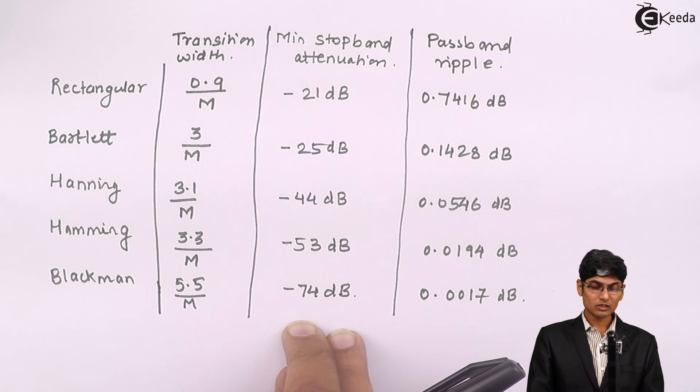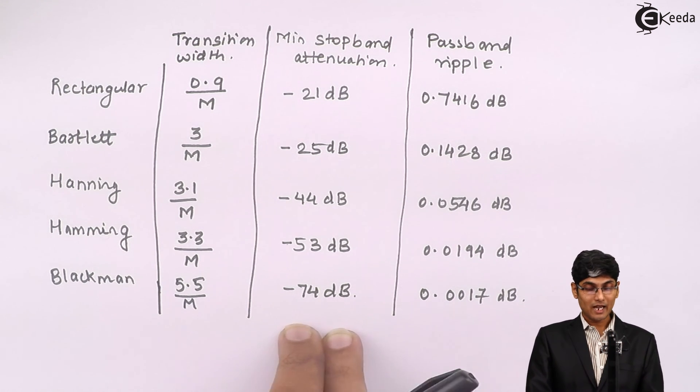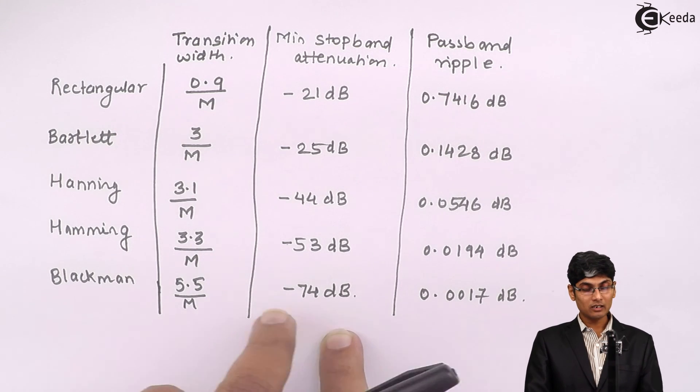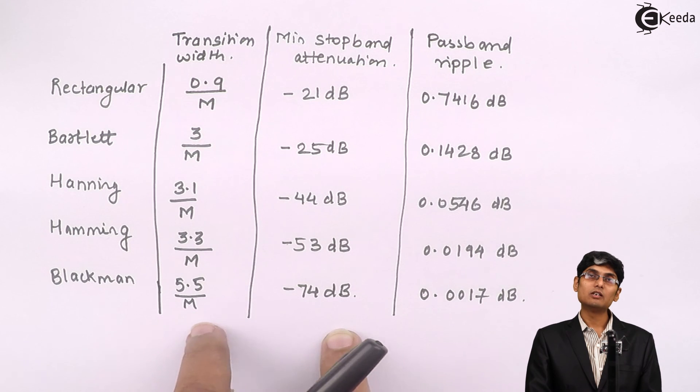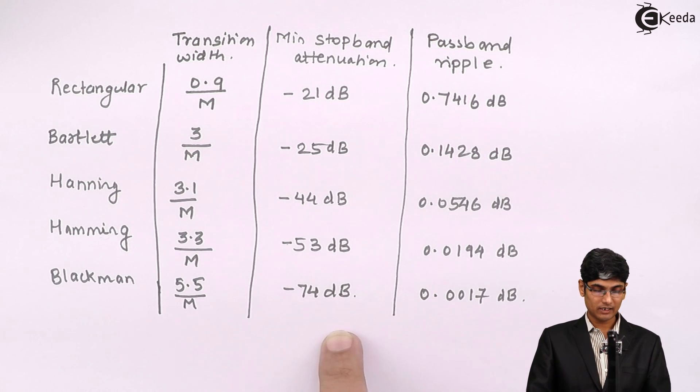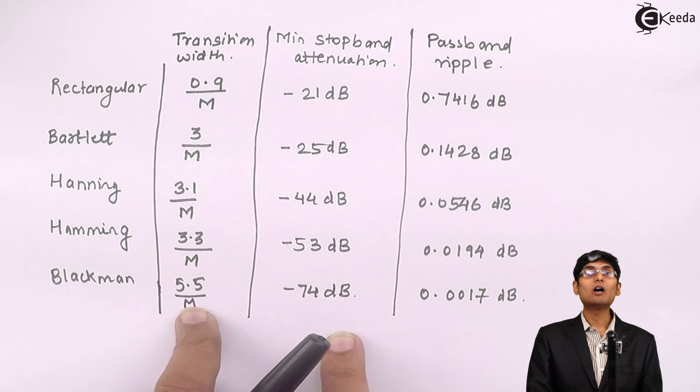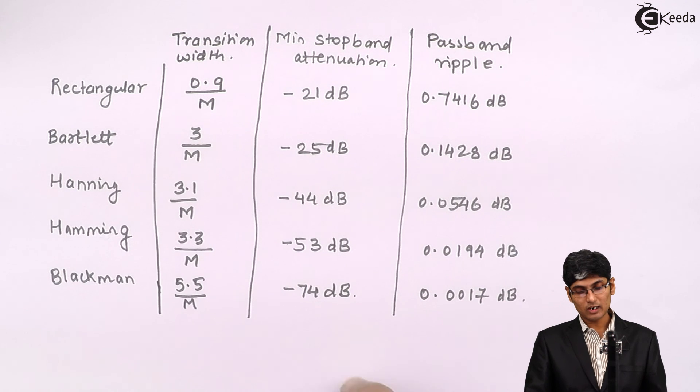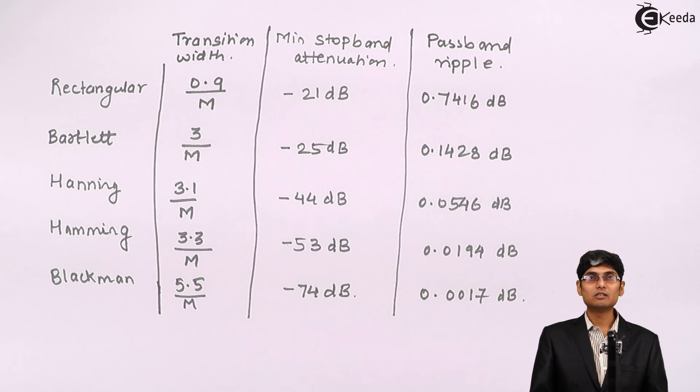Once the window is selected, then the transition width is going to tell me what should be the order of the filter or the M, the length of the FIR filter. So these two columns are really very important columns. These are called the frequency domain characteristics of FIR filter windows. Thank you.